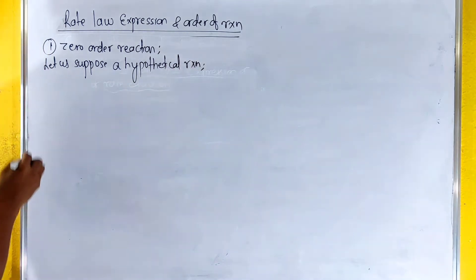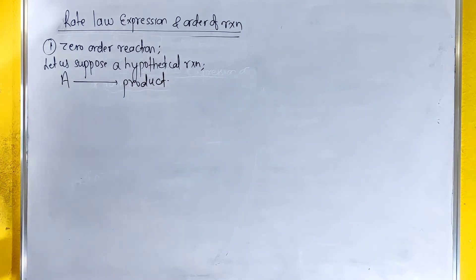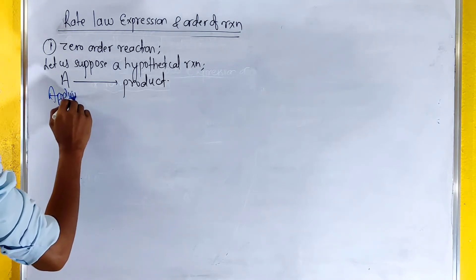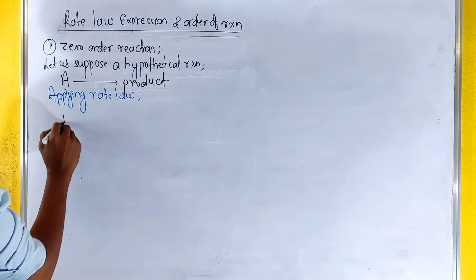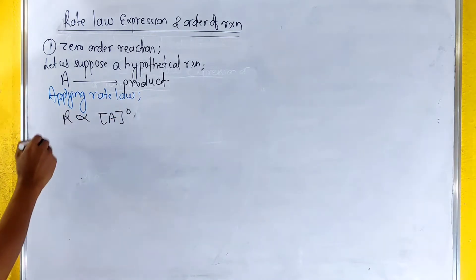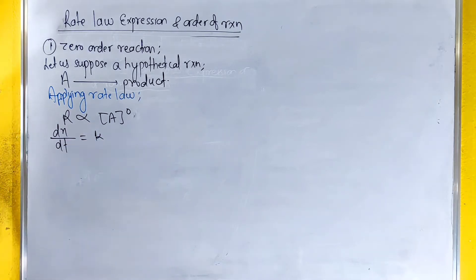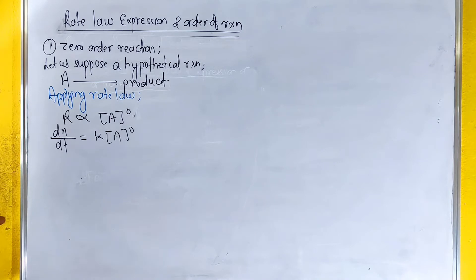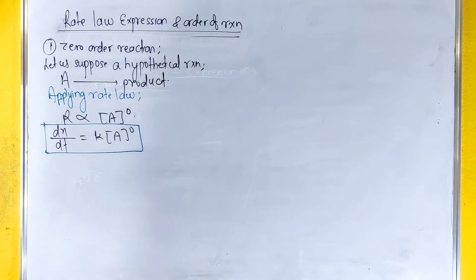For a hypothetical reaction giving product formation, applying rate law: rate is directly proportional to A to the power 0. This is zero order. That is, dx/dt equals k times A to the power 0, which equals k. This is zero order reaction.